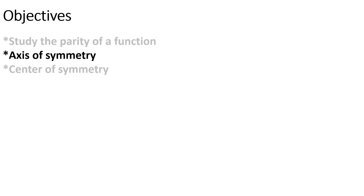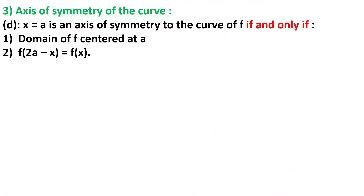Objective 2: axis of symmetry. Last year we studied different elements of symmetry, including the axis of symmetry. Let's recall this concept. To prove that the vertical line x = a is an axis of symmetry of the curve of f, we need to prove two things: that the domain of f is centered at a, and that f(2a − x) = f(x) for all x in the domain.